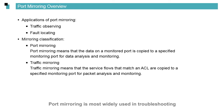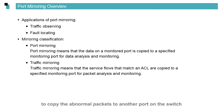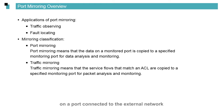Port mirroring is most widely used in troubleshooting. For example, a network interruption may be caused by an infected PC sending abnormal packets. In this case, we can use port mirroring to copy the abnormal packets to another port on the switch and analyze the packets on another PC connected to this port. Port mirroring is also used in traffic monitoring. For example, port mirroring can copy all data on a port connected to the external network to another port connected to an IDS.